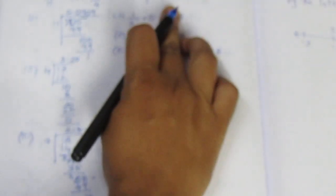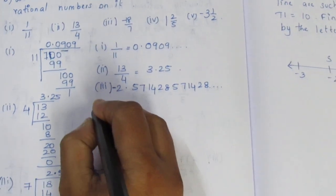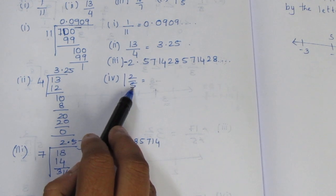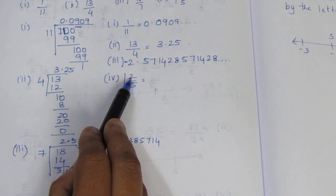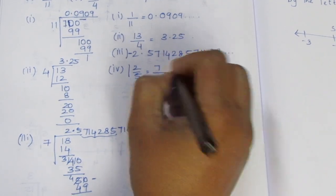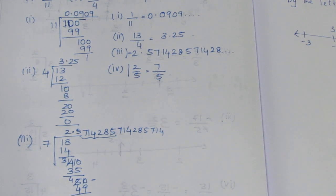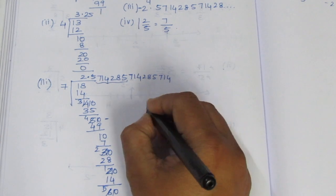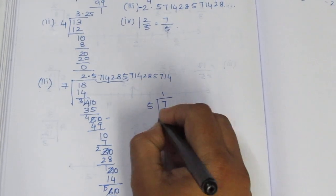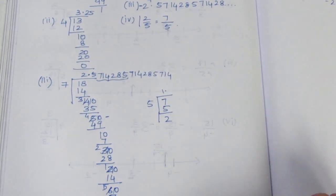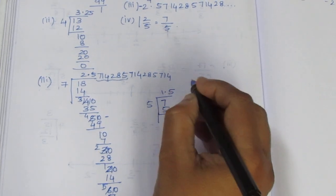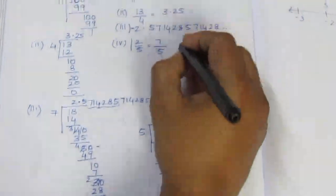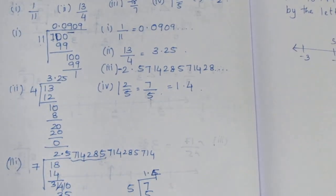Now we will do the fourth sum. The fourth sum is an improper fraction: 7 by 5. We multiply and divide the numerator and denominator. 5 ones are 5, remainder 2. Decimal point, bring down 0. 5 fours are 20, remainder 0. So the answer is 1.4. Fourth sum done.